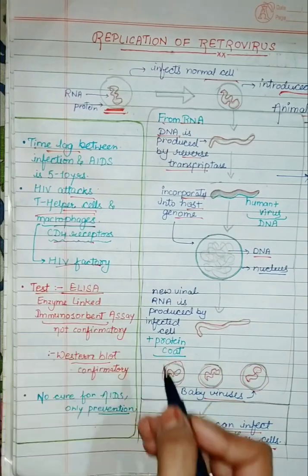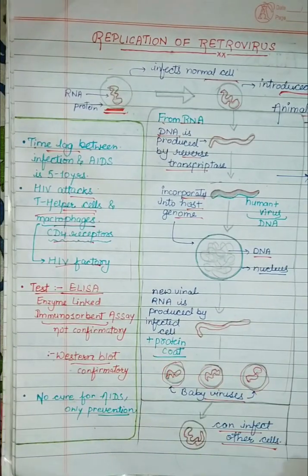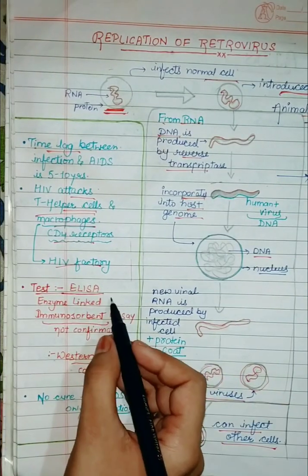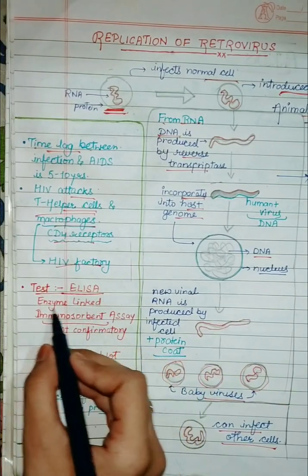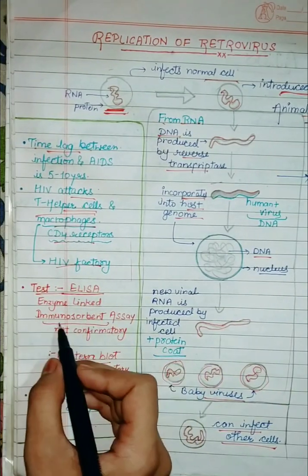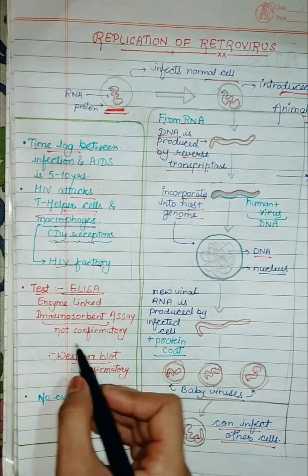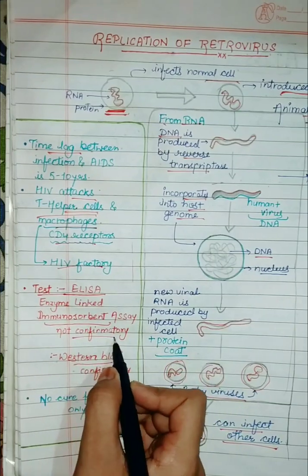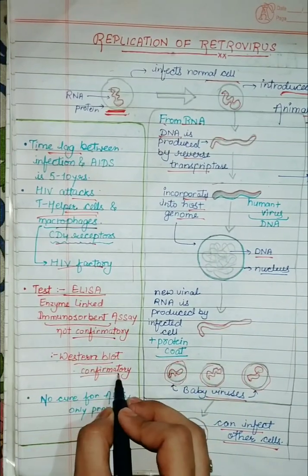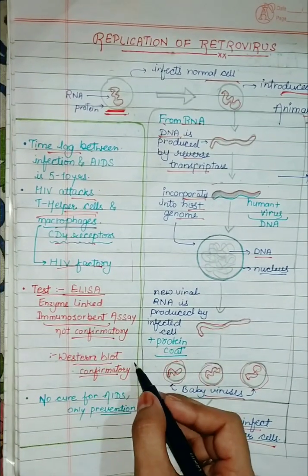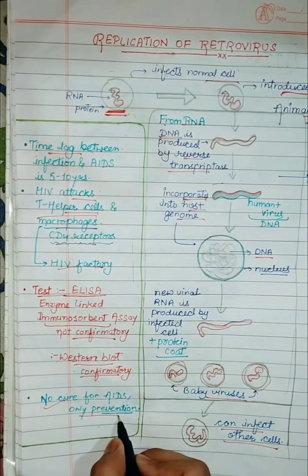The test which is used to detect AIDS is called ELISA — Enzyme Linked Immunosorbent Assay. But it is not a confirmatory test. The confirmatory test is Western blot. And there is no cure for it; there can only be prevention.